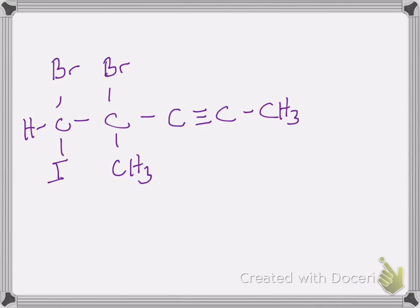For the final example, I start with the same format: first identify the family. I see a carbon-carbon triple bond, so I know it's part of the alkyne family, meaning the name will end in '-yne'. Next I need to find the longest continuous carbon chain that contains the carbon-carbon triple bond, and we want to give the triple bond the lowest number possible. The substituents' positions are secondary — the triple bond dictates the numbering.